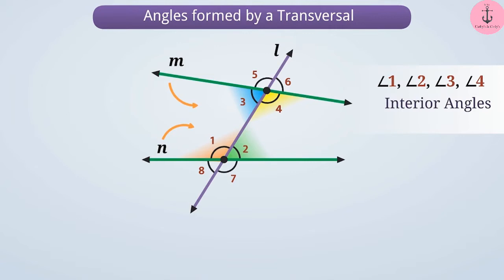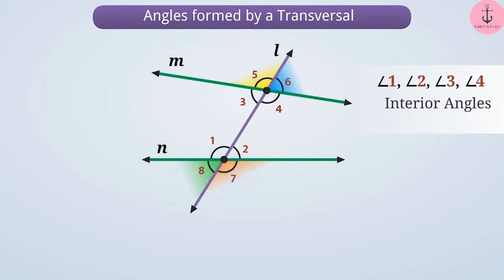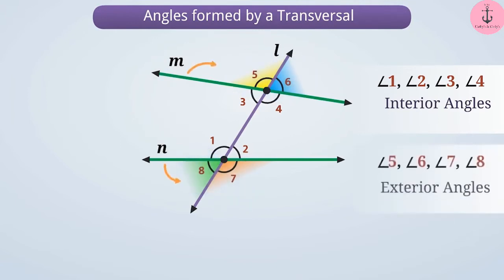Angles 5, 6, 7, and 8 are all on the outside of lines M and N. All the angles formed on the outside of the two lines by a transversal are called exterior angles.